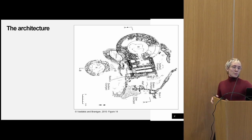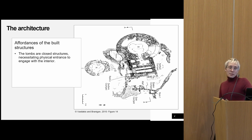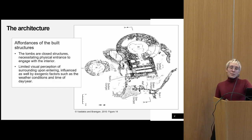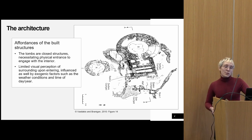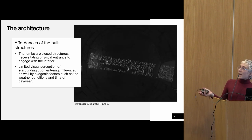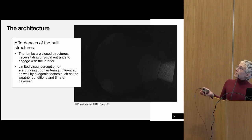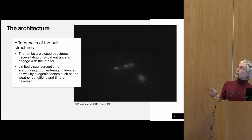Regarding the tombs themselves, there is some controversy about their method of roofing, but if a roof is accepted there would have been closed structures necessitating physical entry to engage with the interior. Upon entering the tomb, visual perception would have been very much limited and dependent on exogenic factors such as weather conditions, the time of day, and the time of year. A study done on a similar cemetery in central Crete gives us a reconstruction of the interior of the tomb at 7 a.m. in April, at 12 p.m. in June, with the option of a wooden roof, as well as with the use of oil lamps.